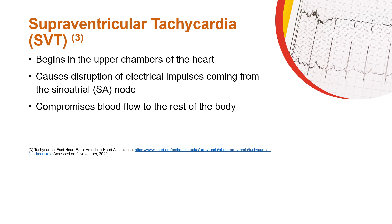Supraventricular tachycardia begins in the upper chambers of the heart, causing disruption of electrical impulses coming from the sinoatrial node. This disruption results in an abnormally faster heart rate, which prevents the heart chambers from filling completely, compromising blood flow to the rest of the body.